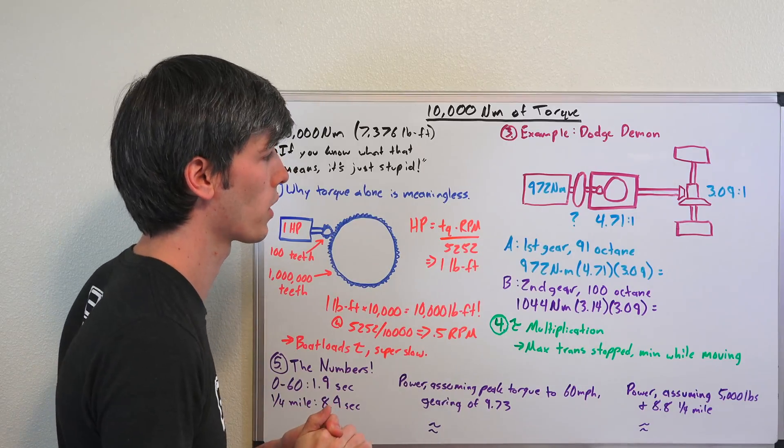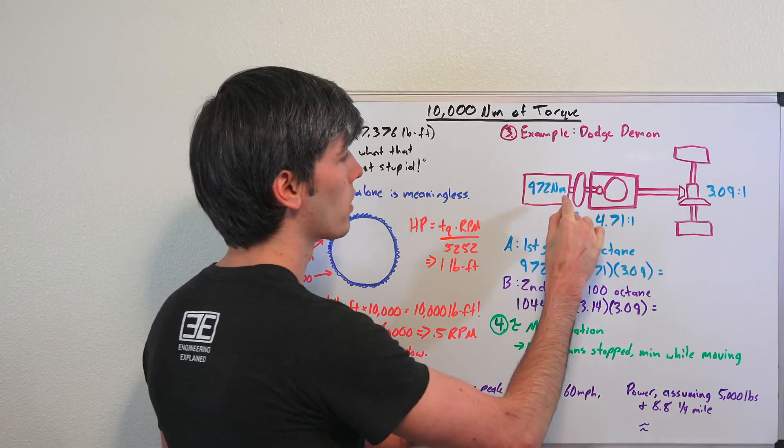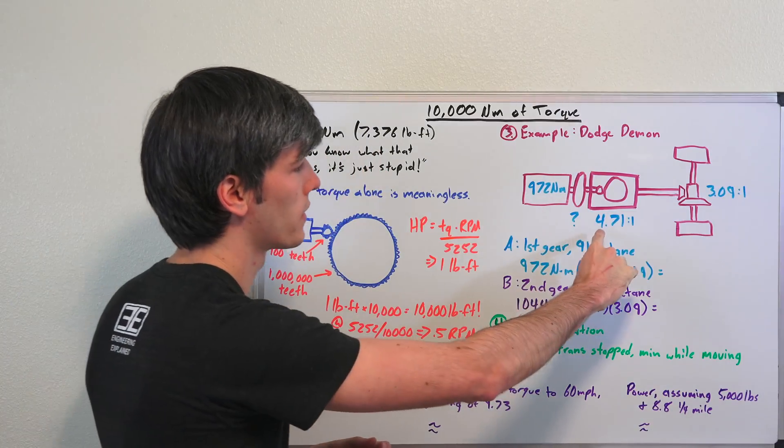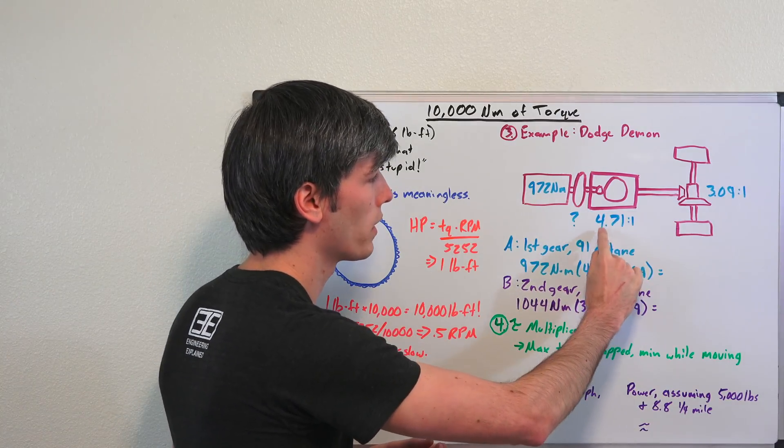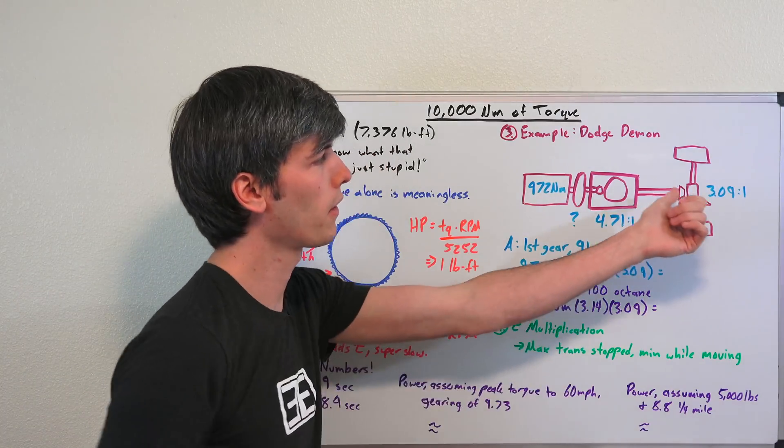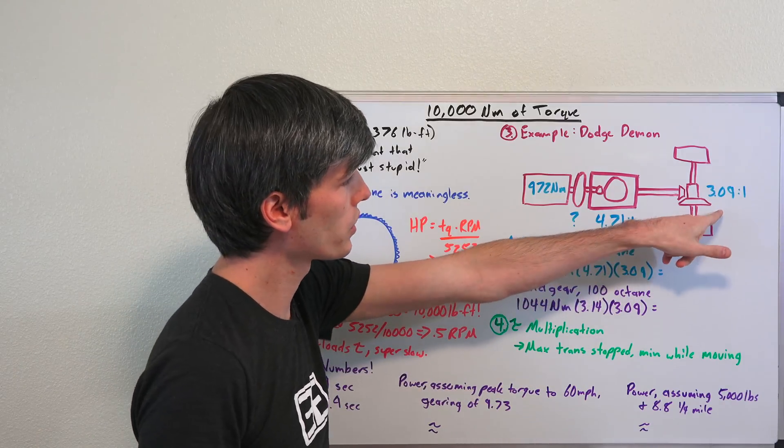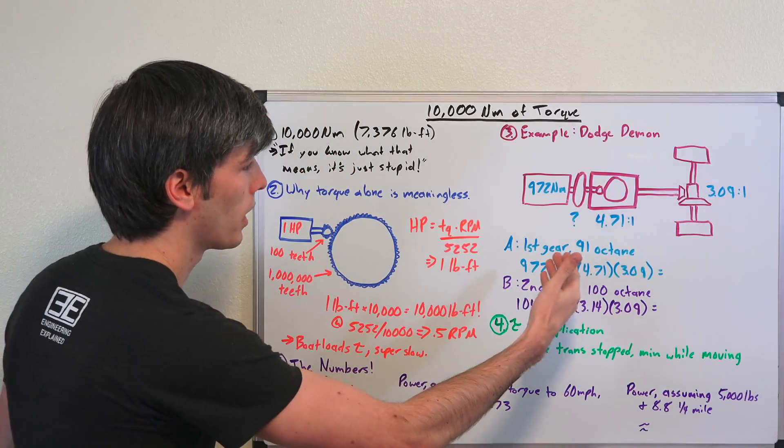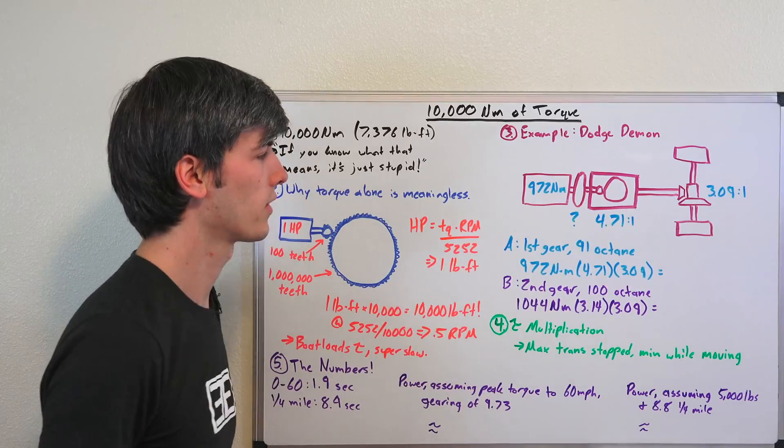972 newton-meters of torque at the engine. That is then going through a torque converter. If we are in first gear that is then multiplied by 4.71 to 1, that's the first gear ratio, and then that finally goes through the final drive which is a gear ratio of 3.09 to 1. So our example with first gear using 91 octane: